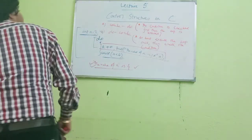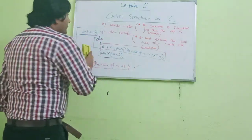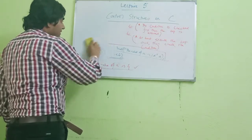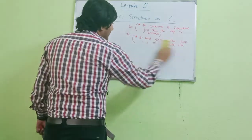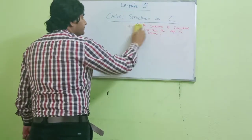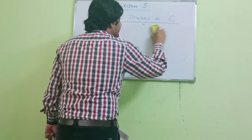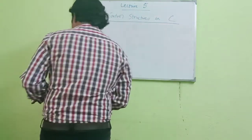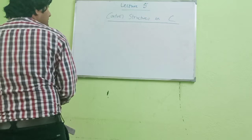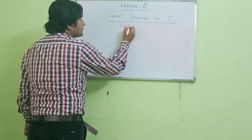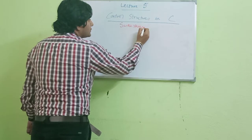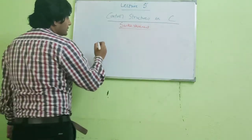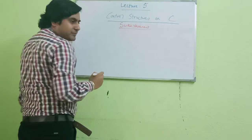So we covered while, do-while, and for loop — the three most important control structures. The fourth one, which is also really important, is the switch statement. It is another control structure. The switch statement is a very important construction: based on a particular value, it selects which block of code to execute.